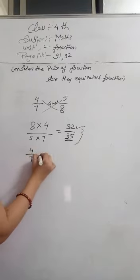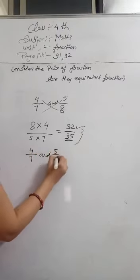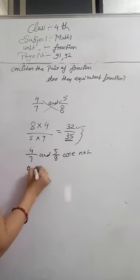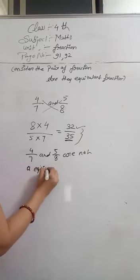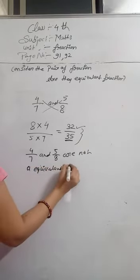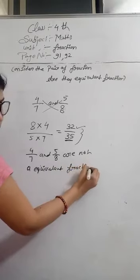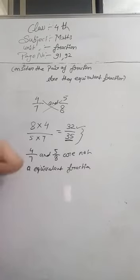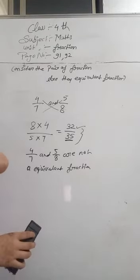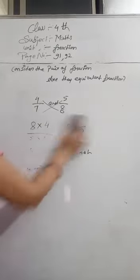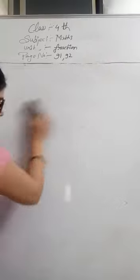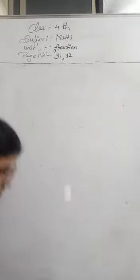4 by 7 and 5 by 8 are not equivalent fractions. Hope you all understand what an equivalent fraction is. So we will do our assignment number 2.